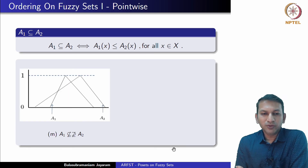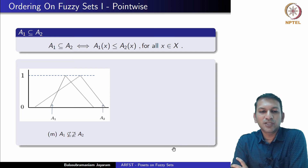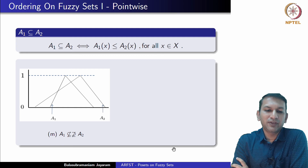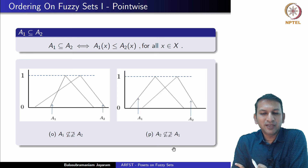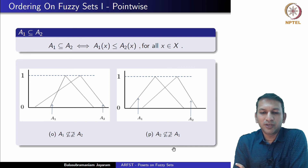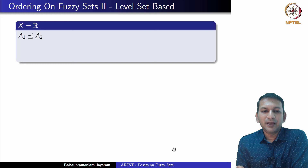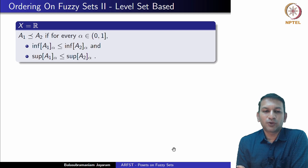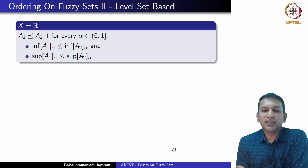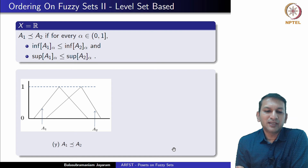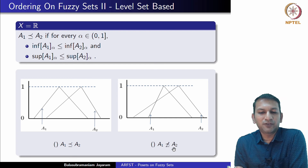Some pairs of fuzzy sets are not orderable under this pointwise relation. We also introduced another order based on alpha-cuts. If X is the real line, we define: A₁ ≤ A₂ if for every α in [0,1], certain inequalities on the infimum and supremum of the alpha cuts hold. Under this order, certain pairs of fuzzy sets that were not orderable before become orderable, while still other pairs remain unorderable.